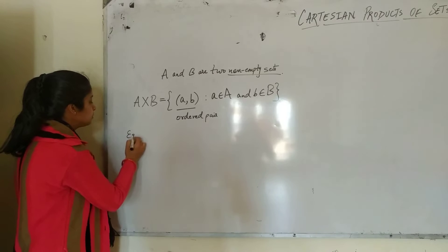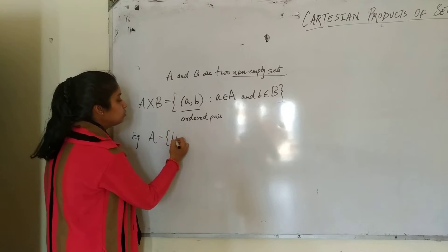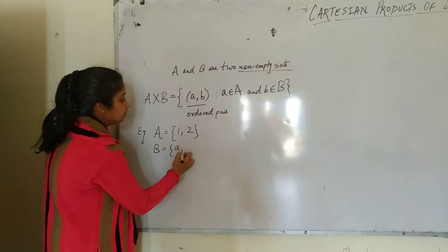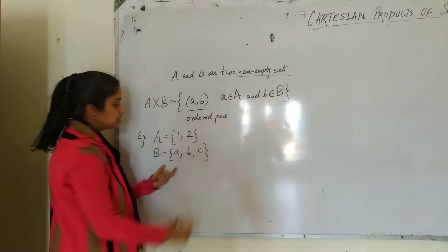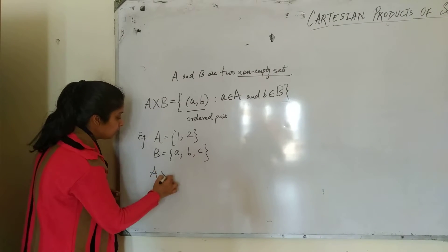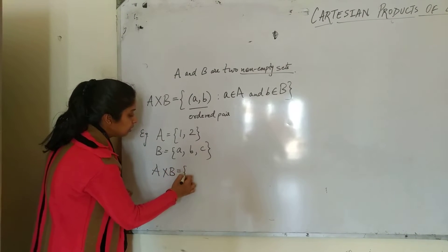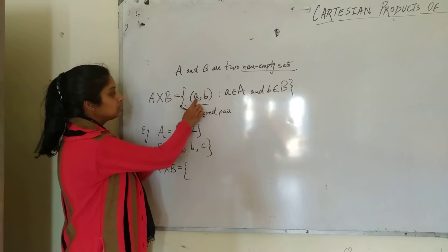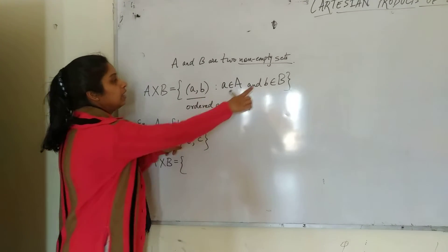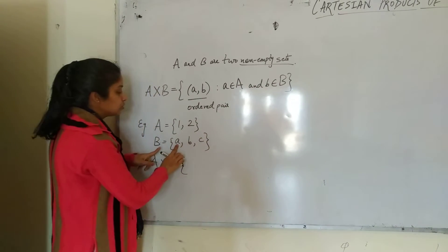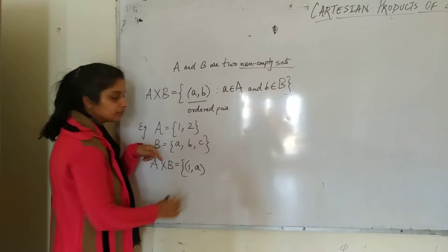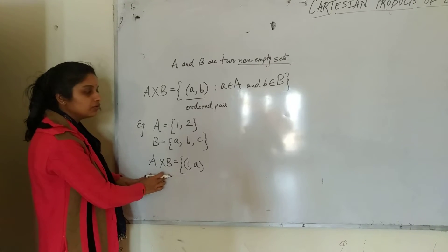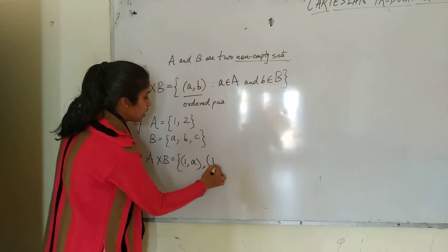Let us take one example. Suppose A contains two elements: 1 and 2, and B contains three elements: a, b, and c. So what is A cross B? First, we take element 1 from set A and pair it with element a from set B, giving ordered pair (1, a). This is one element of A cross B. Next is (1, b).